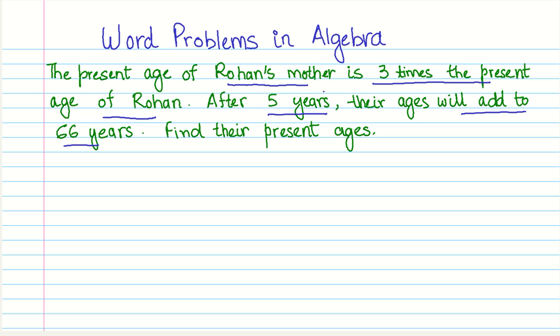Now, the first part of solving algebraic problems is to find out what is an unknown. And we have their present ages as unknowns over here. So we don't know the age of Rohan and his mother. And this might confuse you a bit, thinking that we have two unknowns. So how am I going to use a single variable?